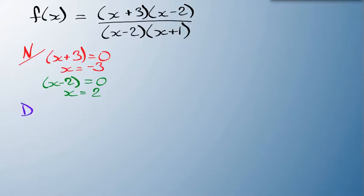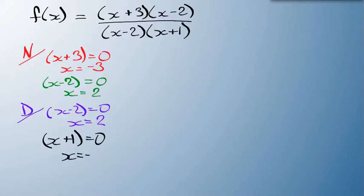If I move on and do the denominator, well, I've got x minus 2 again. That's not going to be any different. That part is going to be zero when x equals 2. And this x plus 1, that's going to equal zero when x equals minus 1.